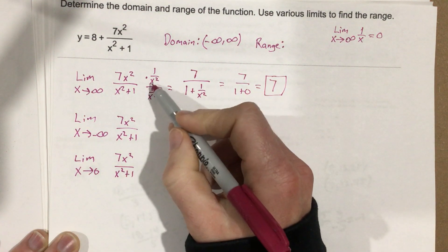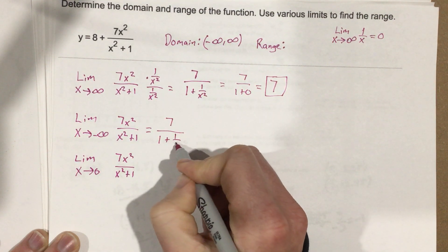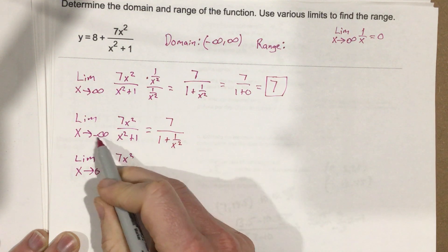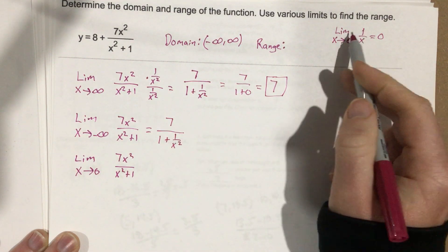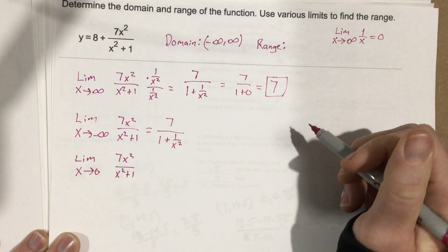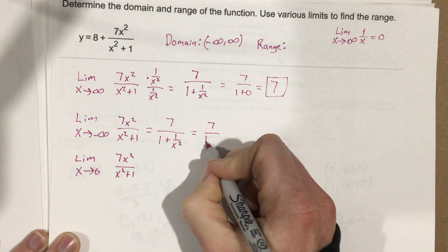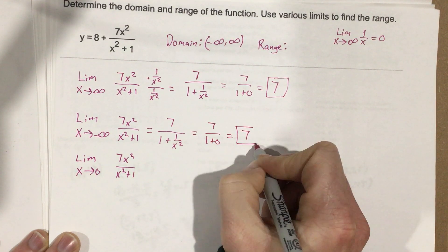Now if we do the exact same thing here, this just leads to 7 over 1 plus 1 over x squared. When we plug in negative infinity, we know that the limit as x approaches infinity, whether it be positive or negative, for 1 over x, is 0. So this is still going to be 0, so I end up with 7 over 1 plus 0, which is 7.